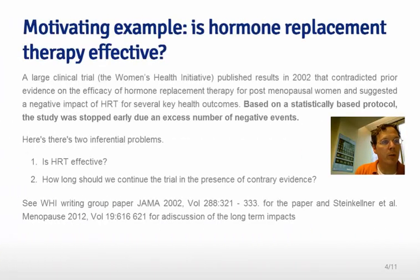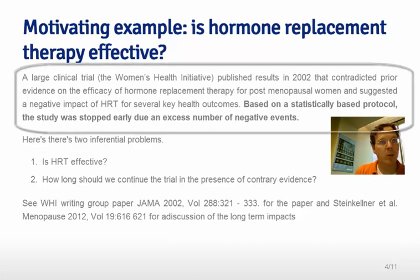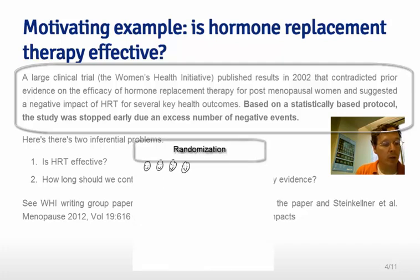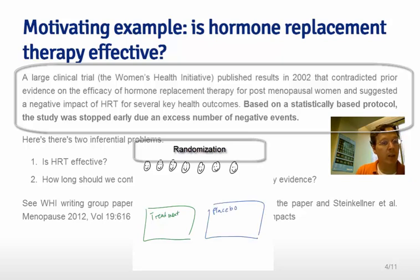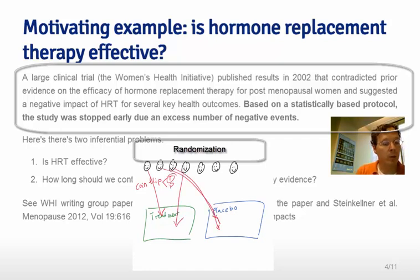A fairly important example of statistical inference occurred with the Women's Health Initiative, where they investigated hormone replacement therapy. Prior to the study, hormone replacement therapy was standard care for postmenopausal women, and this clinical trial investigated its efficacy. It was a clinical trial in that they randomized the treatment — hormone replacement therapy — to one group while randomizing a placebo or standard of care to another group. The randomization balanced unobserved covariates so that inferences would likely not be contaminated by them.